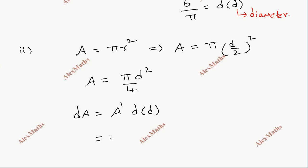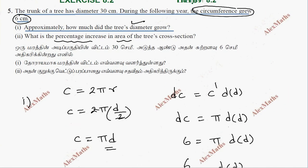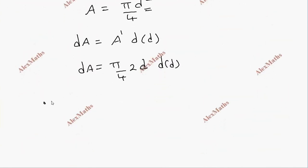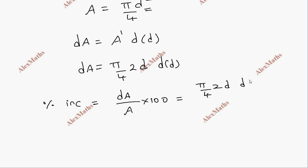Now A dash, the differentiation: π by 4 is constant, so dA equals π by 4 times 2d times dd. The percentage increase in the area is the increase in area divided by the original area, multiplied by 100. So: (π/4 × 2d × dd) divided by (π/4 × d squared), into 100.